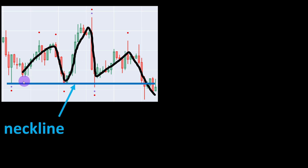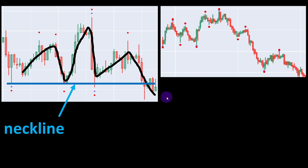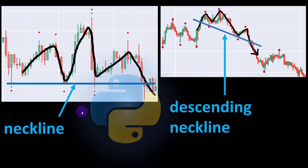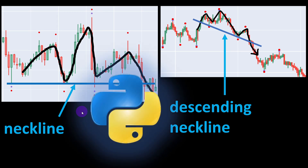Typically the lower price movements are bouncing over a support line called the neckline. There might be different variations of this formation — for example, this chart shows the same head and shoulders pattern, however the neckline has a negative slope, in which case we call it a descending neckline. In this video we will explain the algorithm that can detect these patterns automatically and see how to write all of it in Python. The Jupyter notebook file containing the source code is available for download from the link in the description.